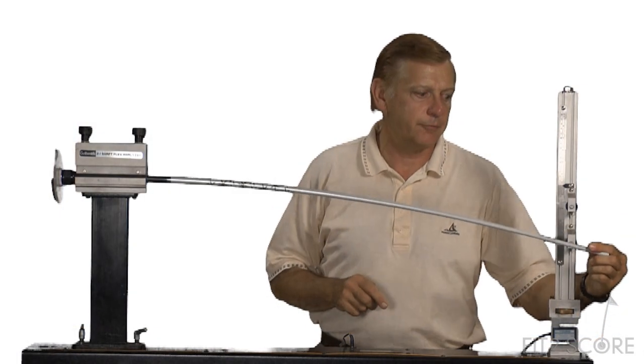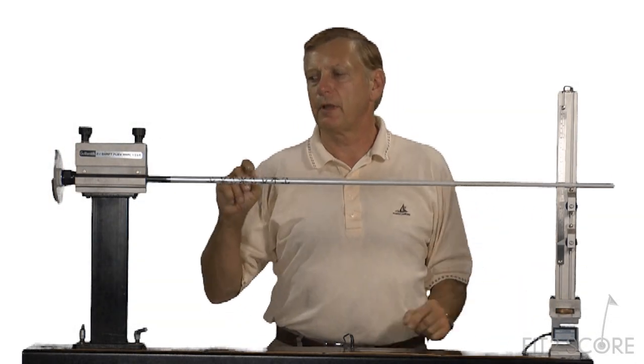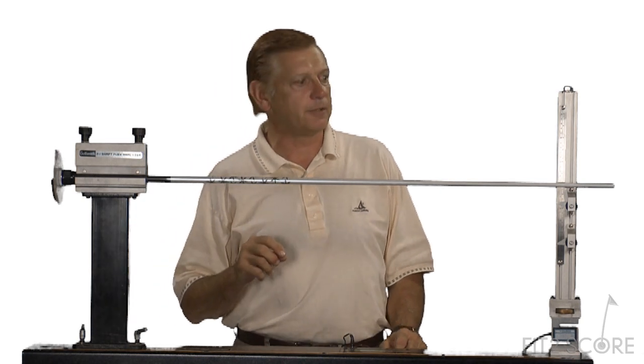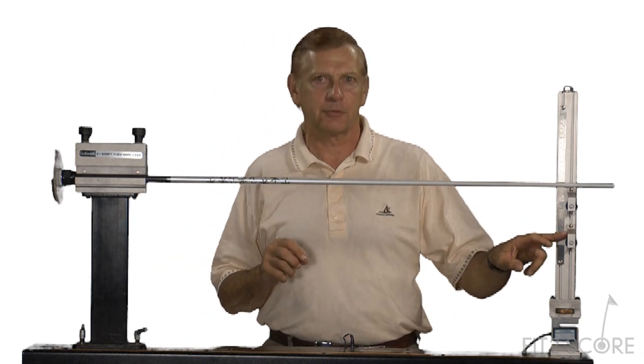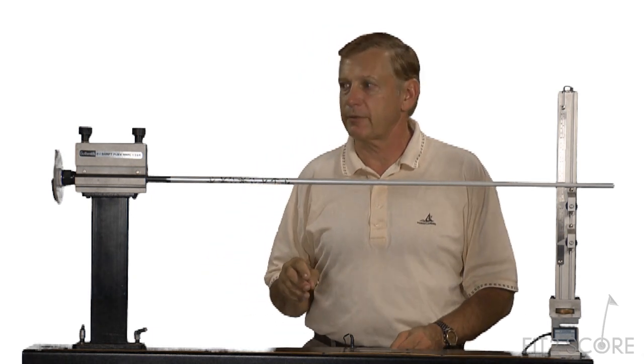Now I'm going to deflect the shaft 5 inches and take another note of the force. The purpose in doing this is to gather the actual material stiffness of the shaft. By subtracting the 1 inch reading from the 5 inch reading, we remove the effect of the bow in the shaft.